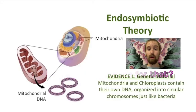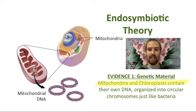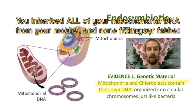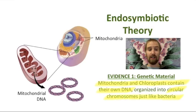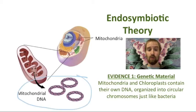The first and possibly most compelling piece of evidence that supports this theory is that mitochondria and chloroplasts actually contain their own DNA. This DNA is distinct from the rest of the DNA contained in the nucleus of a eukaryotic cell. More than that, this DNA is organized into circular chromosomes, just like the DNA found in bacterial cells living today. The fact that mitochondria and chloroplasts contain their own distinct DNA supports the theory that these were once free-living organisms, because all living organisms contain their own DNA. And if mitochondria and chloroplasts were once independent creatures, it would make sense for them to have their own genetic material inside.